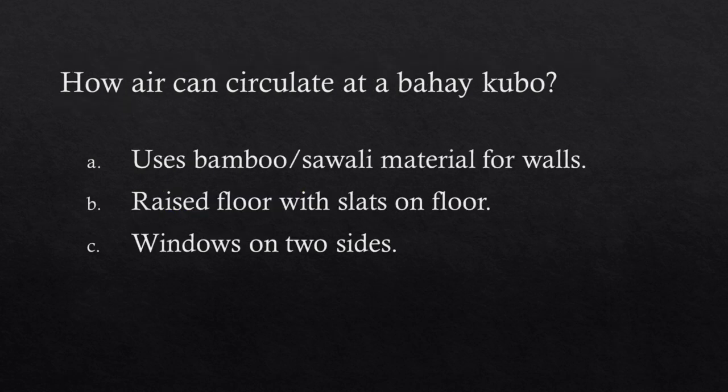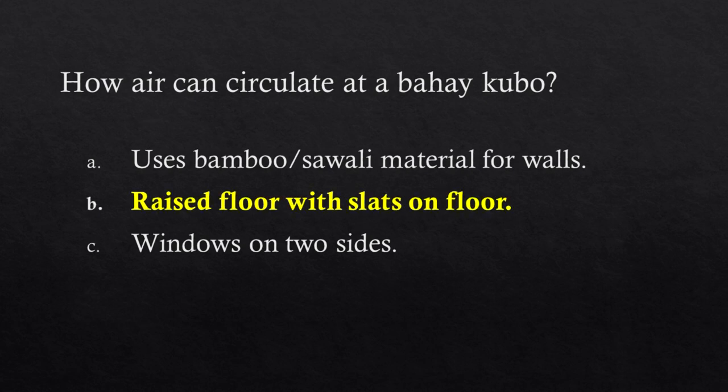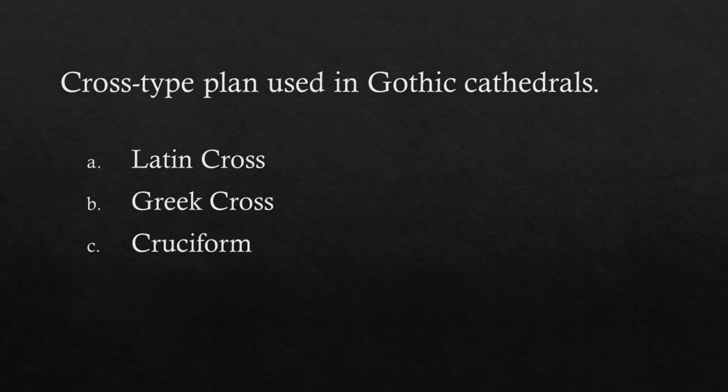Bahay Kubo: how air can circulate. It uses bamboo slash sawali material for walls, raised floor with slats on the floor, and windows on two sides. What type of plan is used in Gothic cathedrals? Choices: Latin cross, Greek cross, Cruciform. Answer: Raised floor with slats — and for Gothic cathedrals: Latin cross.